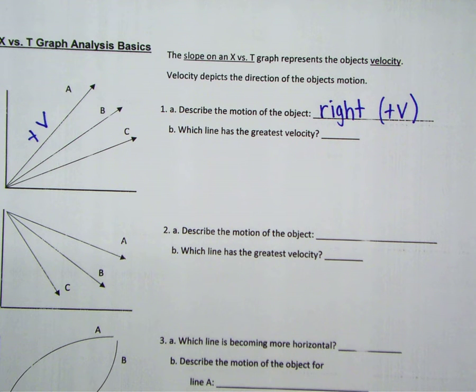Next, we have to look at the three different lines, A, B, and C. To determine the greatest velocity, we want to look at the slopes, and I have a trick.